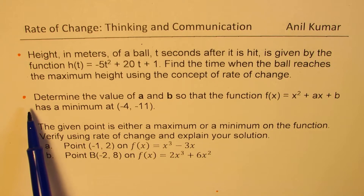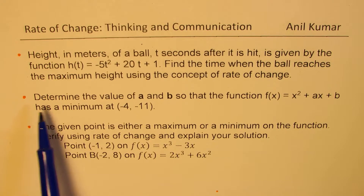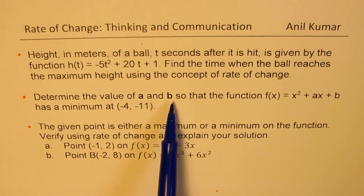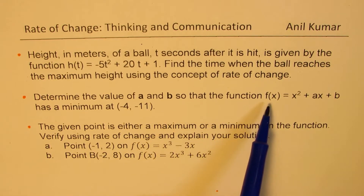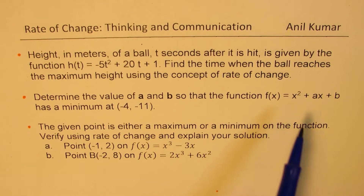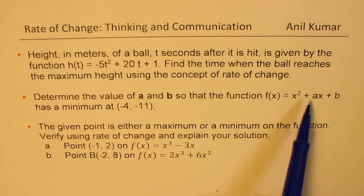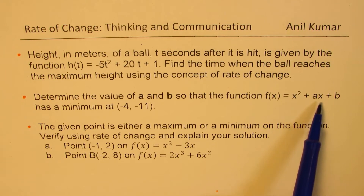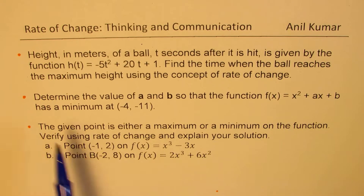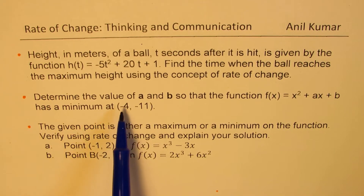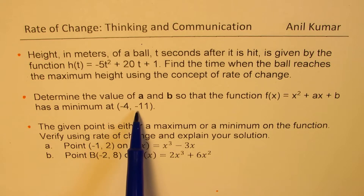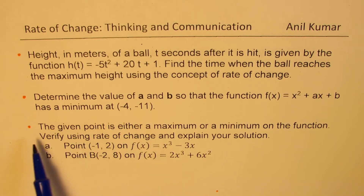Question two: determine the value of a and b so that the function f of x equals x squared plus ax plus b has a minimum at the point (minus 4, minus 11).